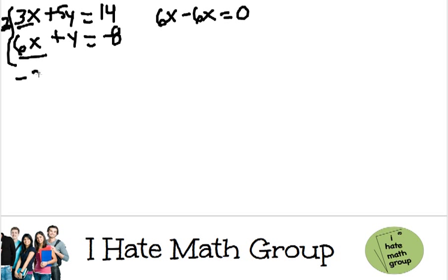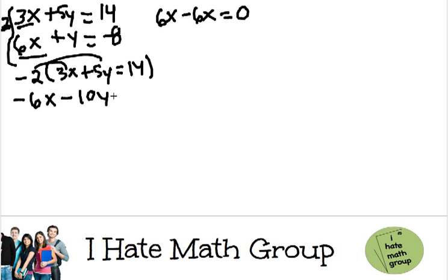Let's do it here. Negative 2 times 3x plus 5y equals 14. So negative 6x minus 10y equals negative 2 times 14, which equals negative 28.